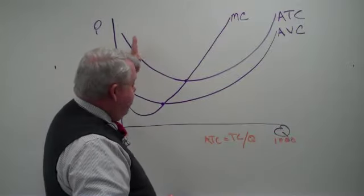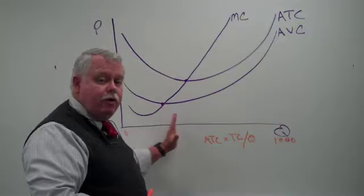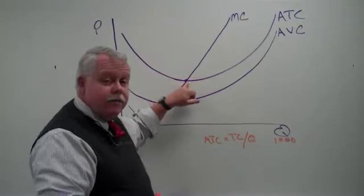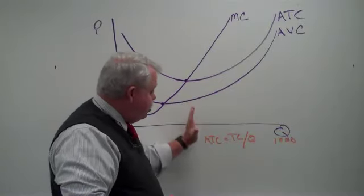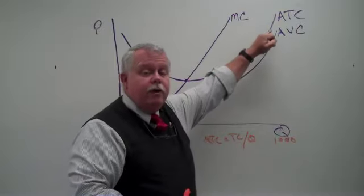We have a declining range of average total costs in the early levels of output. As the total cost declines, it reaches a minimum. I've marked that here. And if we expand production beyond that level, then our cost per unit begins to increase.